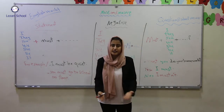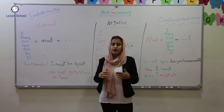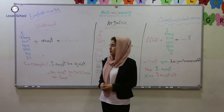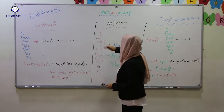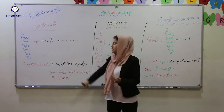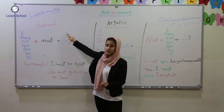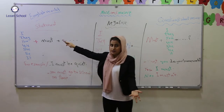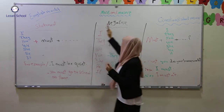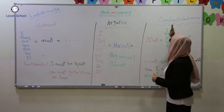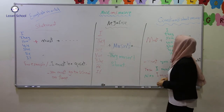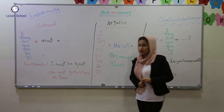For example, you are in a school and you have to follow the rules of this code. We can use must and mustn't in three forms: the statement, or positive form, the negative form, and the question and short answer form.